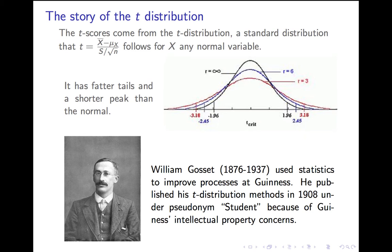The black line is the normal distribution; the red and blue lines are t-distributions with 3 and 6 degrees of freedom respectively. As degrees of freedom increases, the difference from the normal decreases — it approaches the normal distribution. There's an interesting historical story involving beer. William Gossett was an early statistician who worked for Guinness doing quality control. He didn't want to take large samples because he didn't want to waste the beer, so he developed tools for small samples. Guinness wouldn't let him publish, so he published anyway under the pseudonym Student — hence Student's t-distribution.